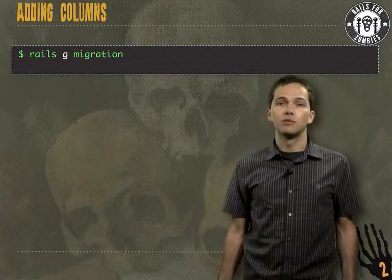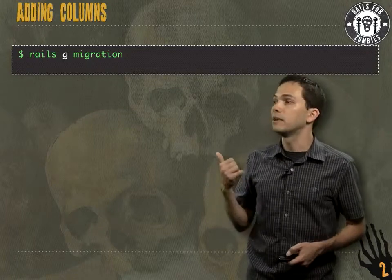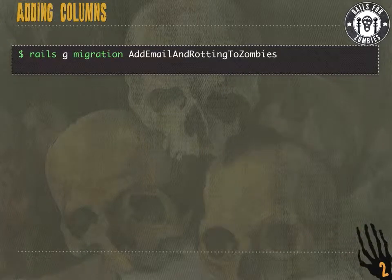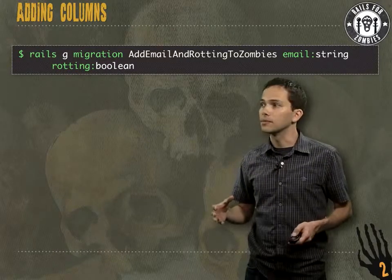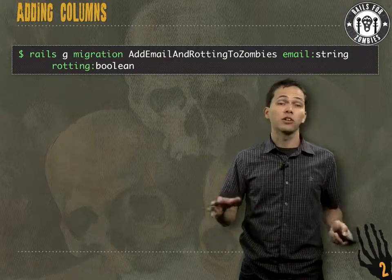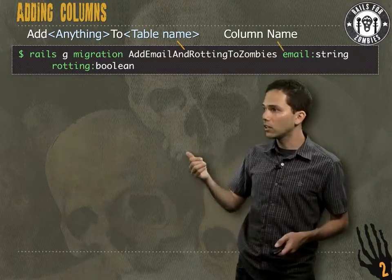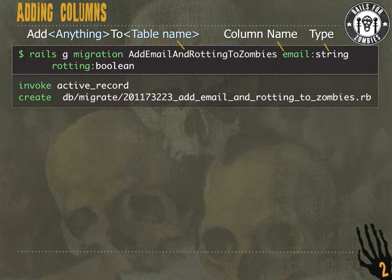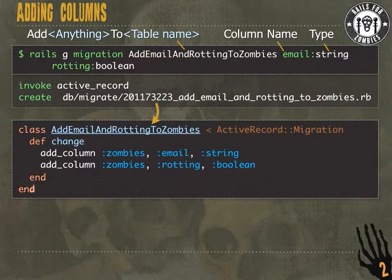We have our zombie table, but we want to make some changes to the database. We do that by generating a migration. We'll call it `AddEmailAndRottingToZombies`. We specify the columns we want to add — the email column, which is a string, and rotting, which is a boolean. When adding a migration that adds columns, we can use the title format `add_X_to_table_name` and it'll write all the code for us. As you can see, it's adding two columns to our zombies table: an email column and a rotting column.